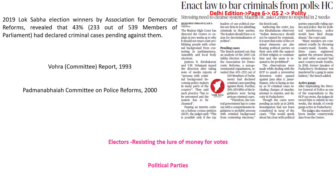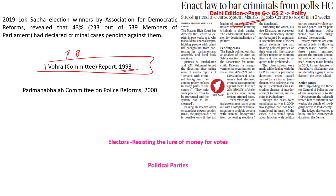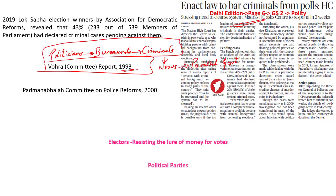Now let's look into the next article, which says: 'Enact law to bar criminals from polls, says the High Court.' Before we understand this issue, we have to focus on historical facts with respect to the criminalization of politics. There was a committee that submitted its report in 1993 — the Vohra Committee report. Vohra was a union home secretary who looked into the criminalization of politics. His report said that there was a close nexus between politicians, bureaucrats and criminals. This nexus gave these criminals the patronage to run what is called a parallel government, and irrespective of the political parties, they had a very close nexus promoting a direct correlation between politicians, bureaucrats and criminals.